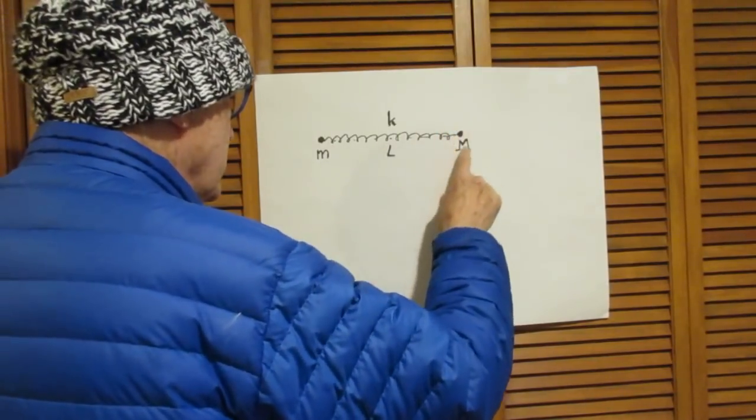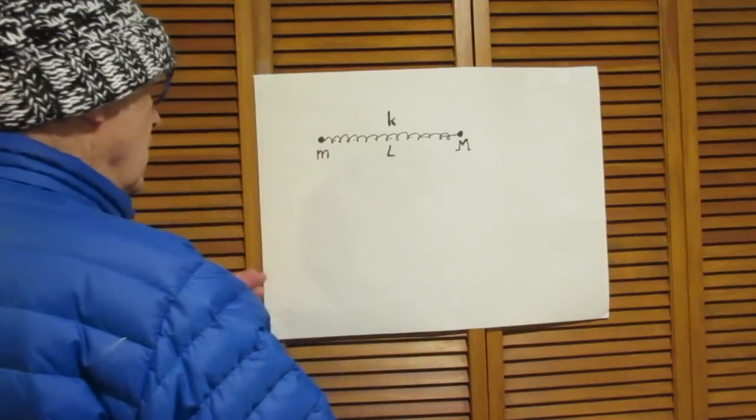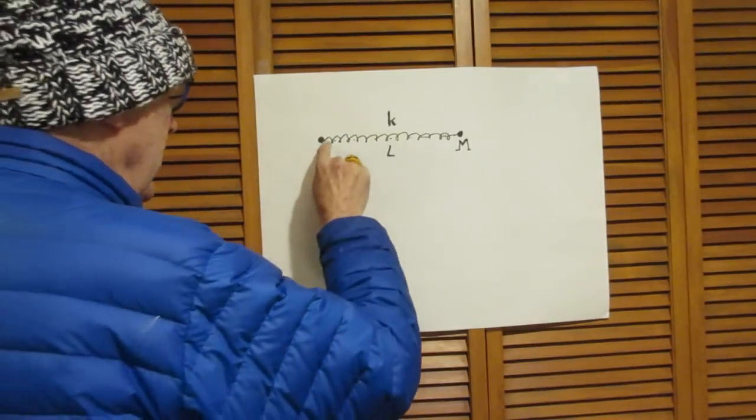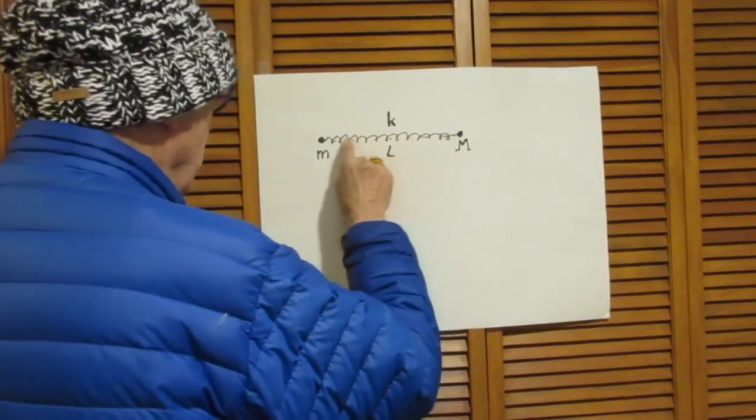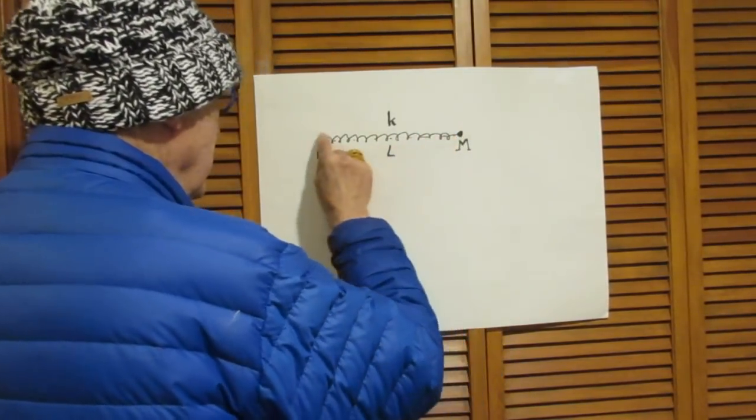At this end is a mass capital M. At this end is a mass lowercase m. We can ignore the mass of the spring completely because it's much, much less than these two masses.